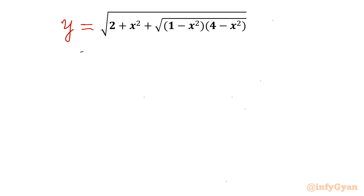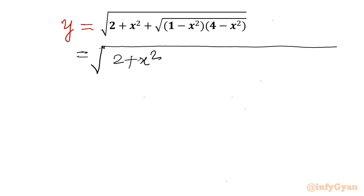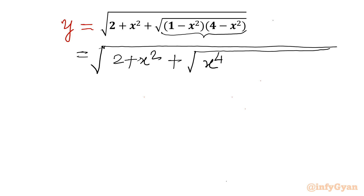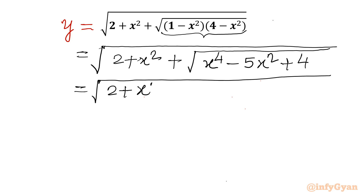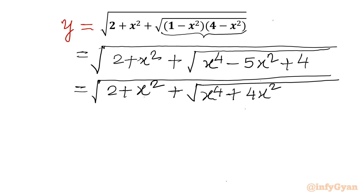We can write our expression as square root of (2 + x²) plus square root of the product of the two brackets. Multiplying (1 - x²)(4 - x²): 1 times 4 is 4, 1 times (-x²) is -x², (-x²) times 4 is -4x², and (-x²) times (-x²) is +x⁴. This gives us x⁴ - 5x² + 4. Now we can write square root of (2 + x²) plus square root of (x⁴ - 5x² + 4).